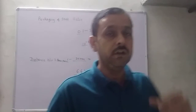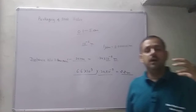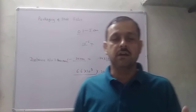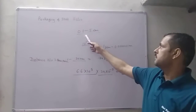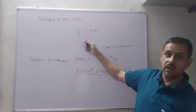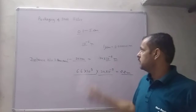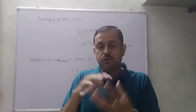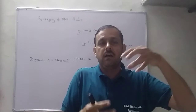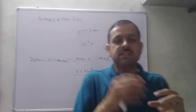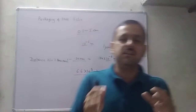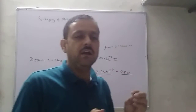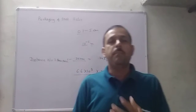अब आप लोग देखिए - DNA की length कितनी है, 2.2 meter, किसमें - एक typical mammalian eukaryotic cell में। Cell की size क्या है - 0.1 से 5 μm, और उसमें भी DNA कहाँ present होता है - nucleus में। Nucleus size क्या है - 10 to the power minus 6 meter। तो 10 to the power minus 6 meter के nucleus में, 2.2 meter length का DNA कैसे included रहता है। A length that is greater than the dimension of a typical nucleus, approximately 10 to the power minus 6 meter - how is such a long polymer packed in a cell?